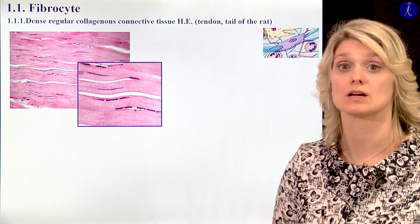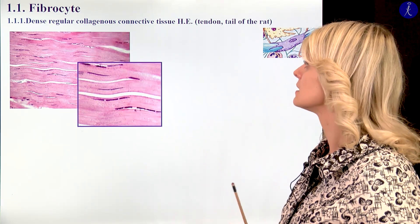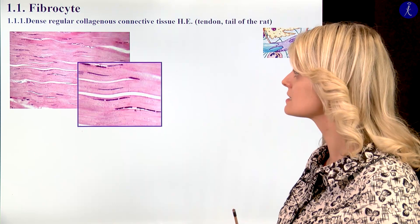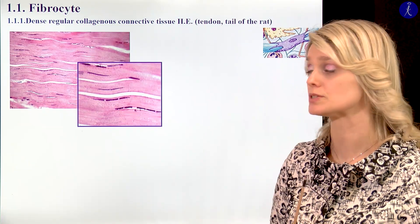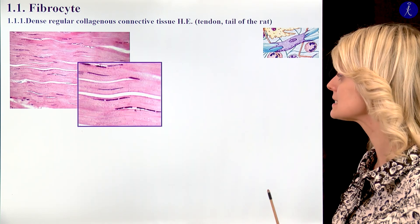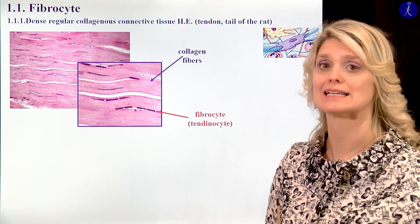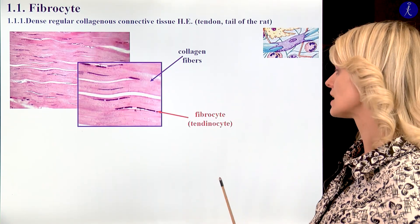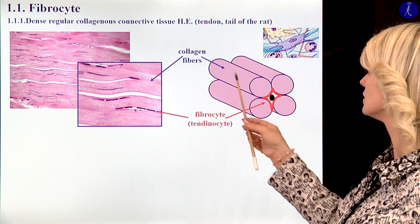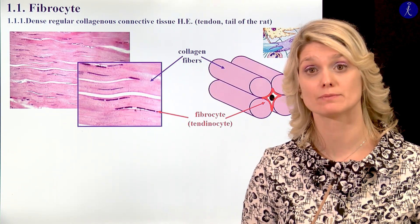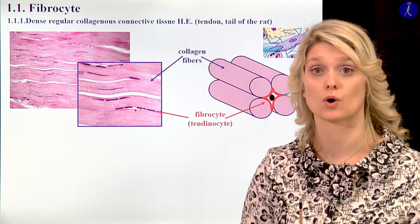I would like to show you first a histological picture about the fibrocytes. These inactive cells are located between the fibers. In this picture you can see the dense collagenous connective tissue — it could be from a tendon or a tail of the rat. These are the collagen fibers, and between them we can see elongated cells with sharp ends — these are the fibrocytes or tenocytes if you are talking about the tendon. In cross-section, they have a star-shaped profile. Similar structures are visible in the deeper part of the skin, which is a dense regular collagenous connective tissue.